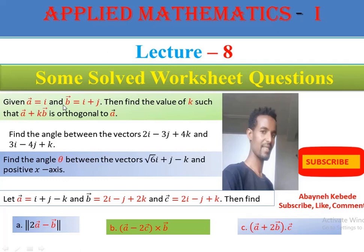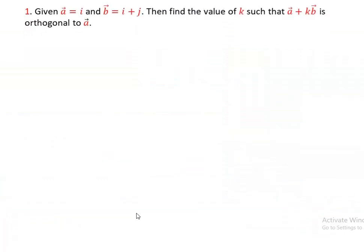Find the vectors. Find the value of K such that A plus KB is orthogonal to A. Find the angle between vectors 2I minus 3J plus 4K and 3I minus 4J plus K. Find the angle between the vectors with the positive x-axis. Given the vectors A equals I and B equals I plus J, then find the value of K such that A plus KB is orthogonal to A.